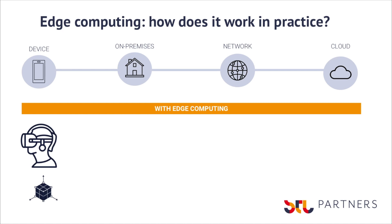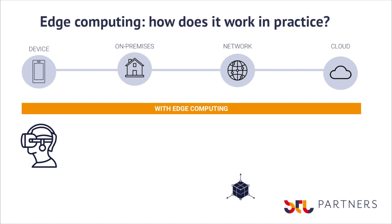With edge computing, very limited compute happens on device. This means AR headsets can become more lightweight, making them comfortable to wear for longer periods and also cheaper. Instead, data on the orientation and location of the user is streamed to either the network or on-premise edge, where rendering of the model occurs. By using edge compute, new features of the application become possible — for example, edge can enable real-time collaboration.